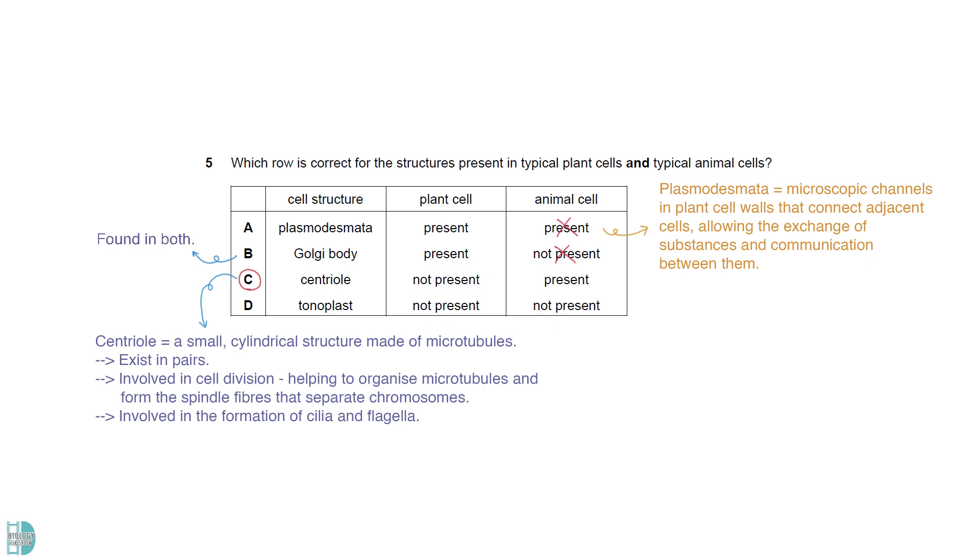A centriole is a small cylindrical structure made of microtubules. They usually exist in pairs and are involved in cell division, helping to organize microtubules and form the spindle fibers that separate chromosomes. Centrioles also play a role in the formation of cilia and flagella. Tonoplast is the single membrane that surrounds the vacuole in plant cells.